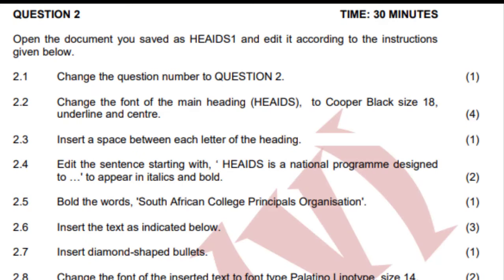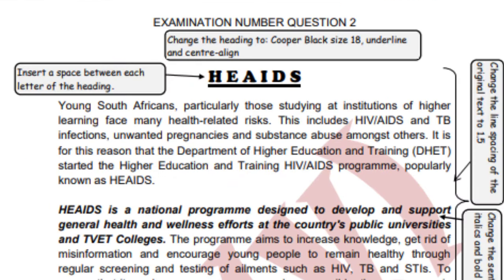2.6 says insert the text as indicated below. Number 2.7 says insert diamond shaped bullets. Number 2.8 and so on. Now, when we look at the text that we are editing as indicated in the question paper, you are told more in what we call manuscript signs and instructions pointing to where the sentences or words must change. So I've done the text and done the one where I had to change the font.